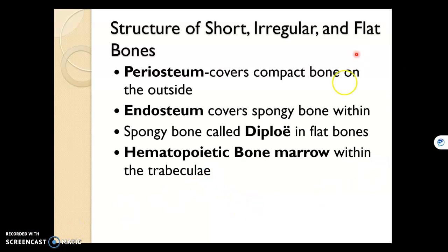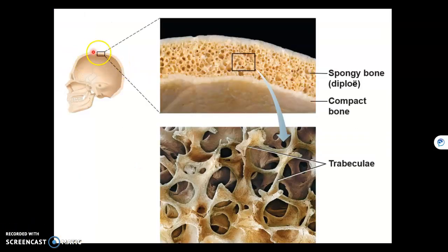When dealing solely with flat bones, there's an important structure called diploë. I'll show you what diploë is on a picture on the next slide. Here's an example of a flat bone in the skull — it happens to be the parietal bone.